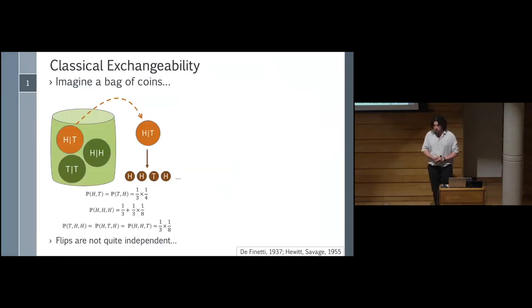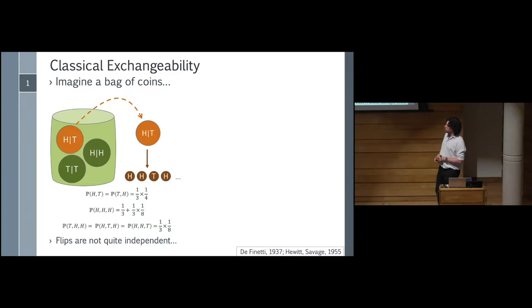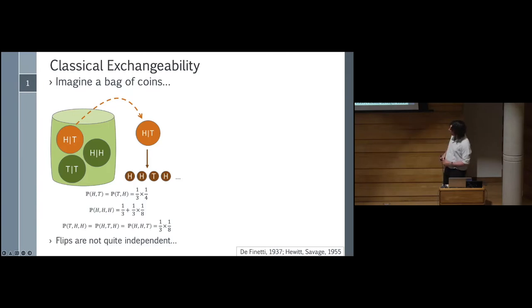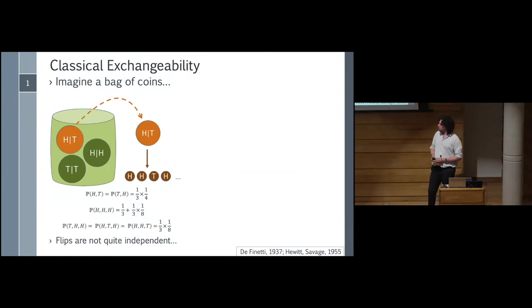Let's jump right into de Finetti theorems in general. Exchangeability is originally a condition on classical probabilistic processes. This is a quintessential version of an exchangeable event: exchangeability means that our results are independent of the order that we get them in. We can see here that this process, where we've got a bag of coins — one of them is fair, one only flips heads, one only flips tails — and then we pick a coin from the bag and flip it forever. This creates a list of heads and tails results that doesn't care what the order of those results is.